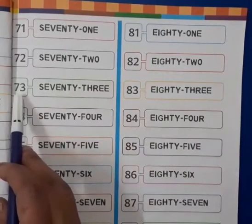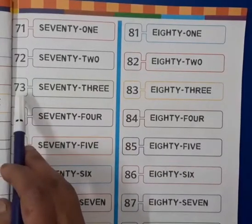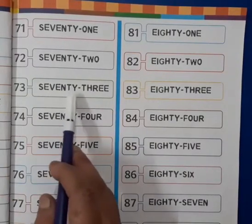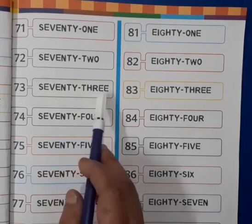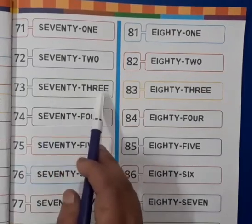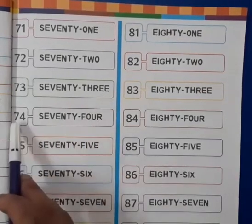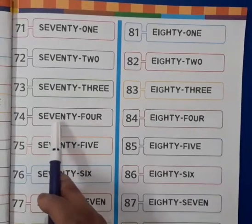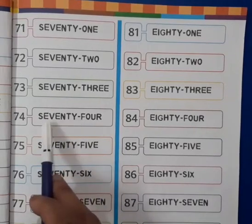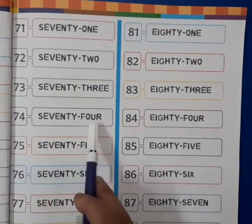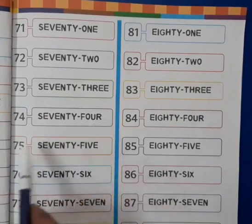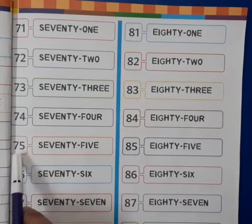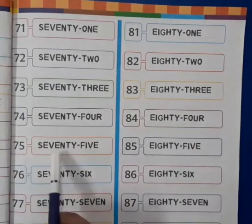Next is 73. S-E-V-E-N-T-Y, T-H-R-E-E, 73. Next is 74. S-E-V-E-N-T-Y, F-O-U-R, 74.